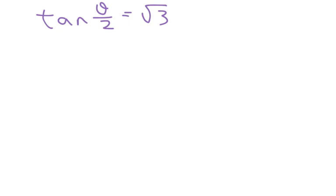So the first one is tan of theta over 2 equals root 3. You're going to do the same thing you did before. You're going to just solve for tan of theta equals root 3. And in this case, we get theta equals pi over 3.